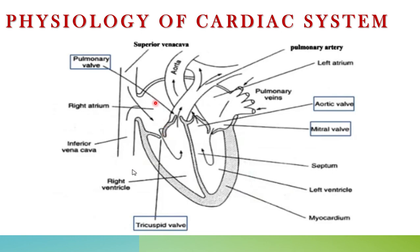An important distinction: the right side of the heart carries impure blood, which is deoxygenated blood, and the left side carries pure blood, which is oxygenated blood.